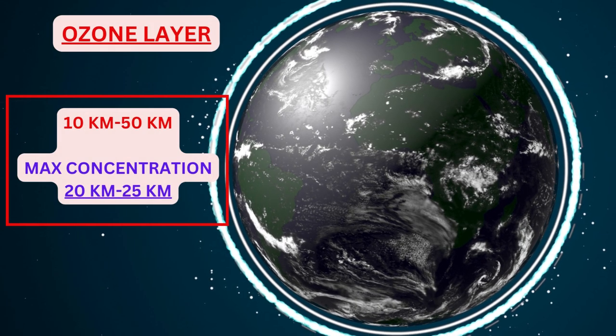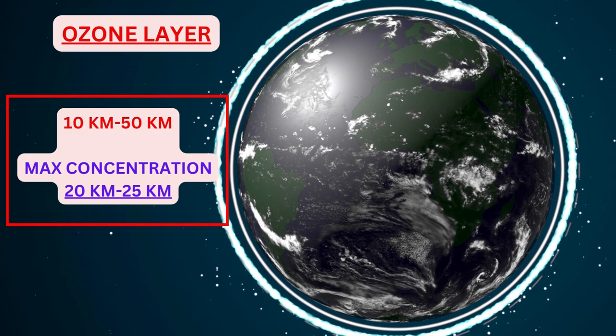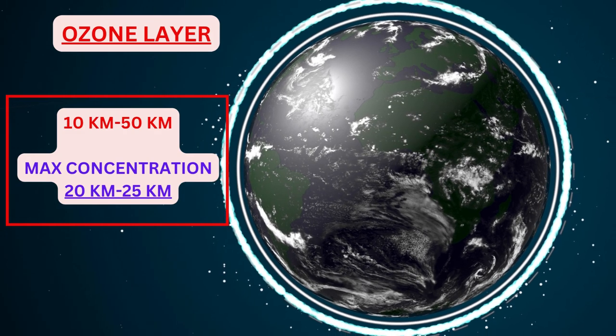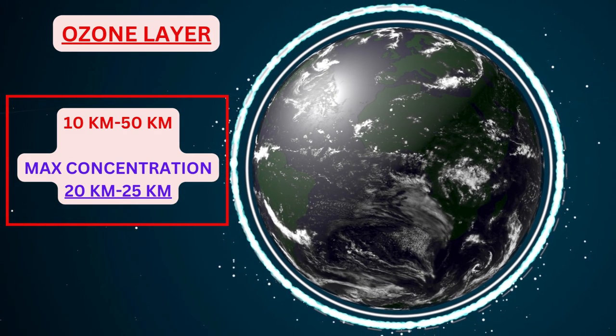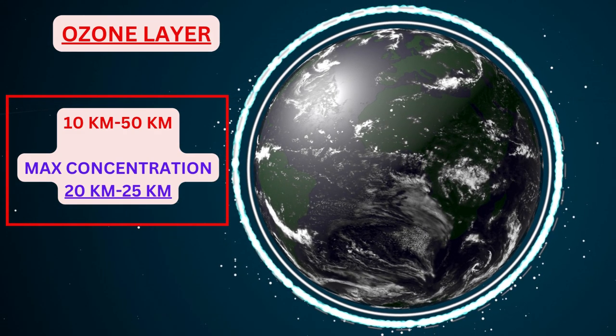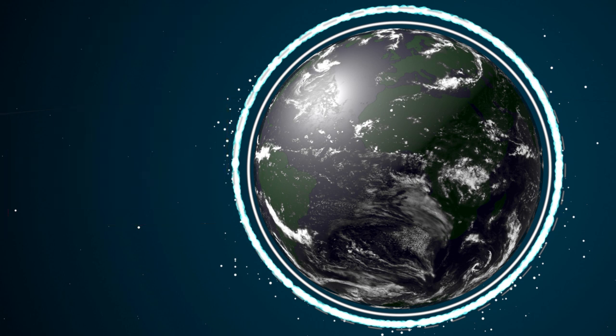The ozone layer is responsible for protection of living beings on earth from the harmful effects of UV rays. It is found between 10 to 50 km altitude and its maximum concentration is between 20 to 25 km.